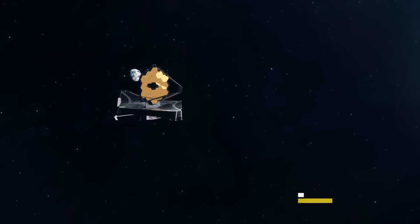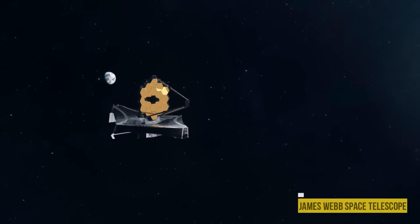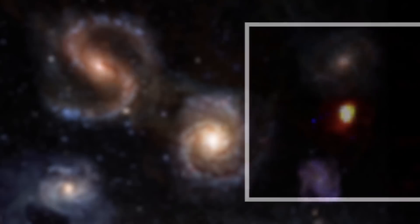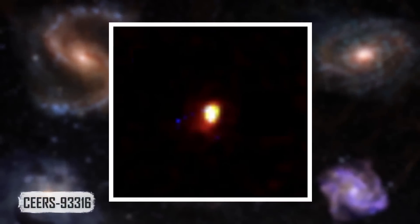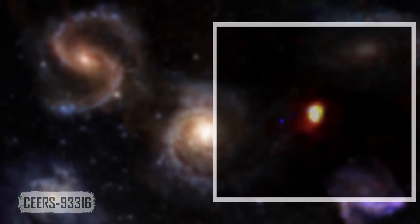Observations using NASA's $10 billion James Webb Space Telescope have revealed a galaxy 35 billion light-years from Earth, known as SEARS 93,316.